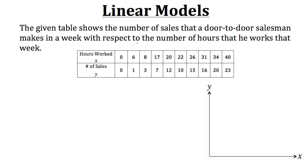Now let's actually take a look at a real-world example that would involve a scatter plot. So the table we have here shows the number of sales that a door-to-door salesman makes in a week with respect to the number of hours that he works that week. So for us we have this data here and for example five let's plot it on the coordinate axes over here to the right.